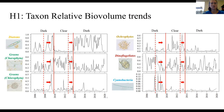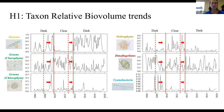Looking at the phytoplankton relative biovolume trends, one of the first things I noticed was that the phytoplankton responses to changes in water color were actually quite delayed. The initial change from dark to clear phase had a phytoplankton response lag time of about two years. Then from the clear phase moving into the second dark phase, the lag time was much shorter — only about one year — which suggests that the phytoplankton community is more sensitive to transitions to darker periods.